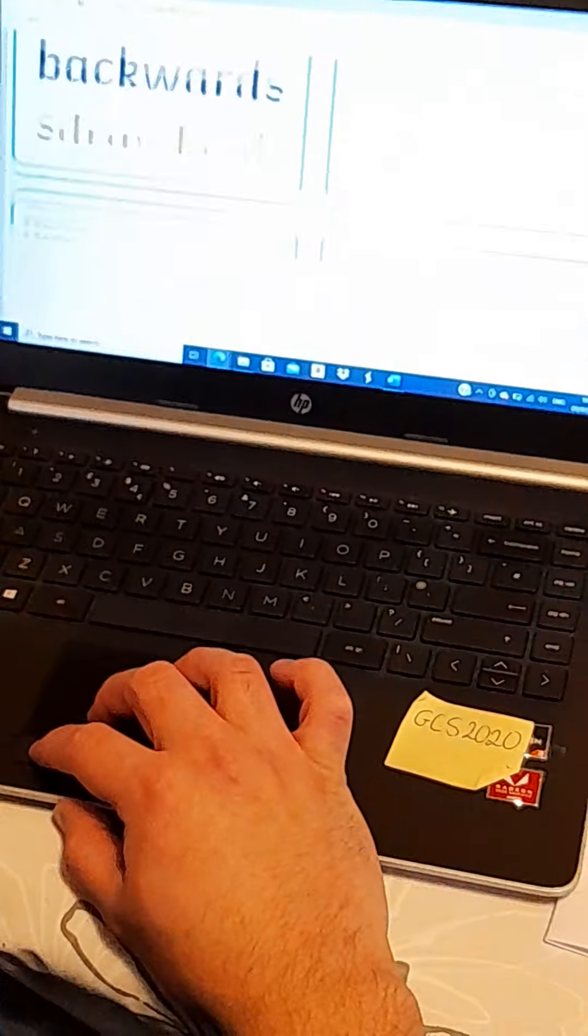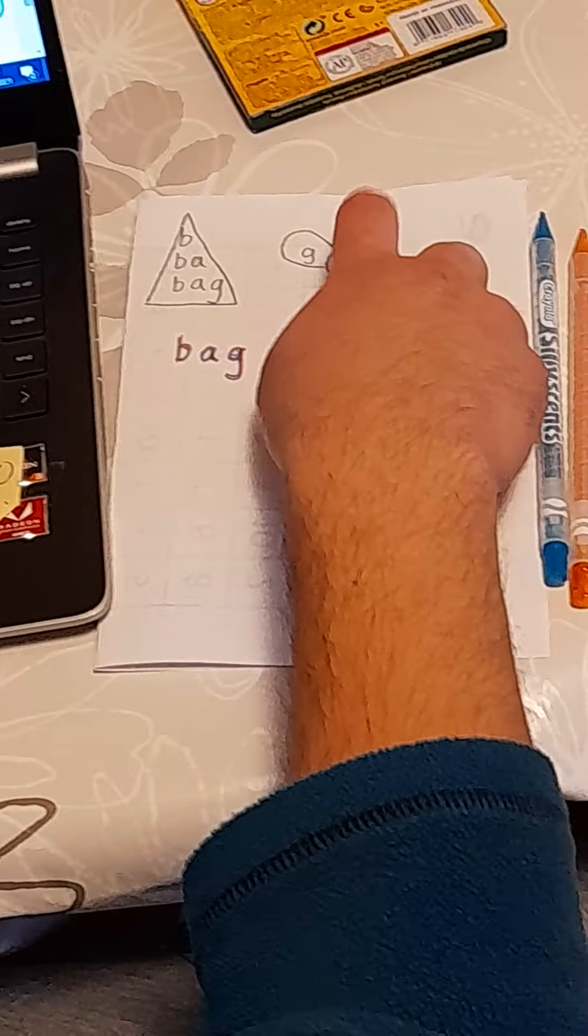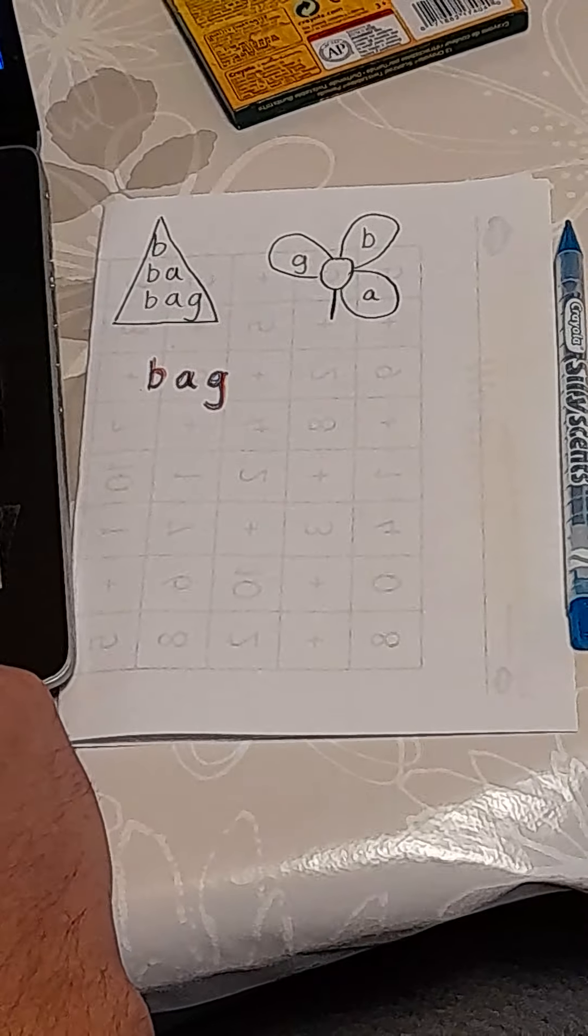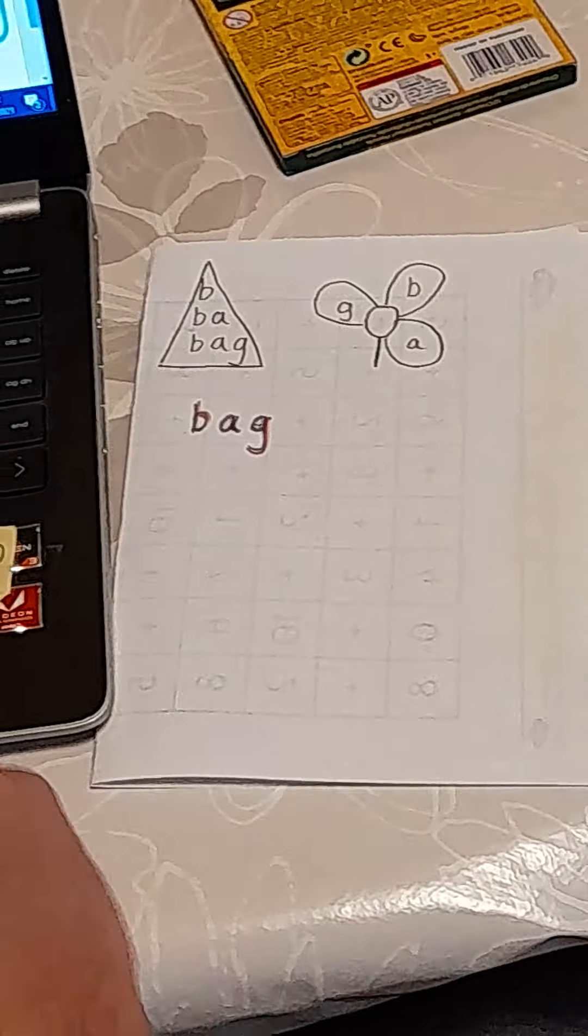Another one we have done is the spelling flowers. So I've drawn a little flower with as many petals as I need, depending on how many letters are in the word. And I've written the letters in clockwise around the middle of the flower there. B, A, G, bag.